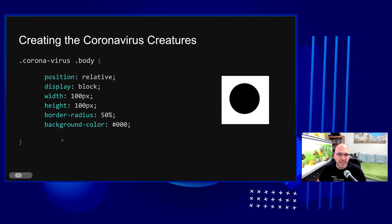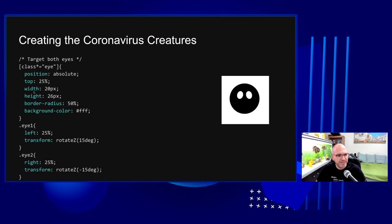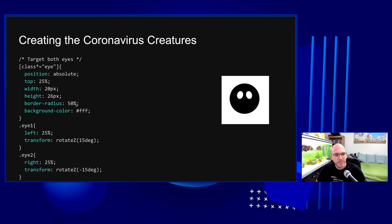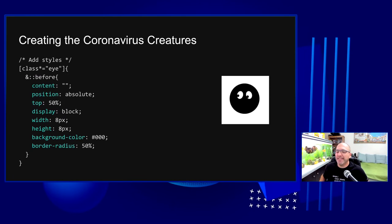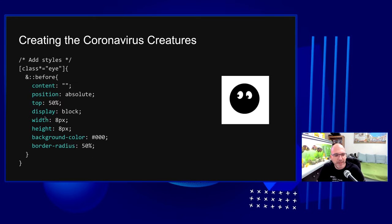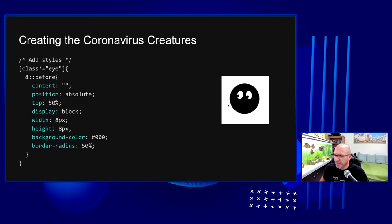I started painting the coronavirus creature: I gave the body position:relative, width and height of 100px, background-color black, and border-radius 50% for the circle shape. For the eyes I used the attribute selector with the star character to select both 'eye1' and 'eye2' classes, giving them different width/height and border-radius 50%, which creates an egg shape. They're positioned absolute — top 25%, left 25% and right 25% — slightly rotated inward, with before pseudo-elements for the pupils.